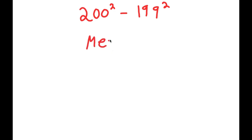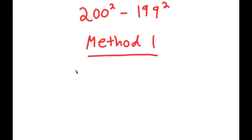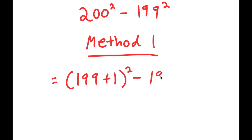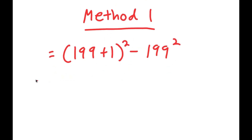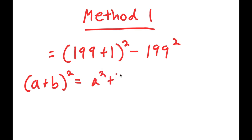For method one, I'm first going to rewrite 200 squared as 199 plus 1 squared. So now I get 199 plus 1 squared minus 199 squared. From here, I can use the algebraic property that states that if I have something in the form a plus b squared, this is equal to a squared plus 2ab plus b squared.